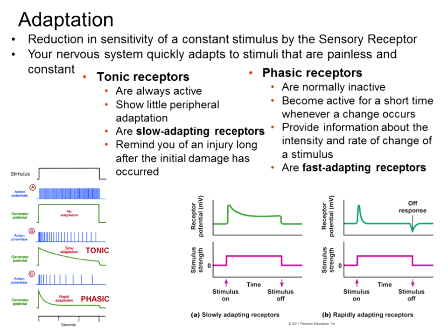The body wants to lessen or dampen the effect of constant incoming information, so you may not even realize after a while that you're wearing clothes. The body adapts and lessens the number and intensity of action potentials in one of two ways: through tonic receptors or phasic receptors.